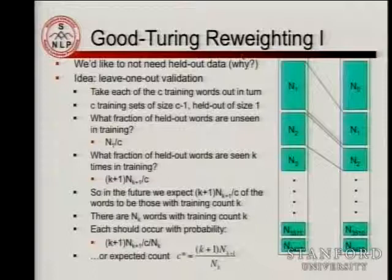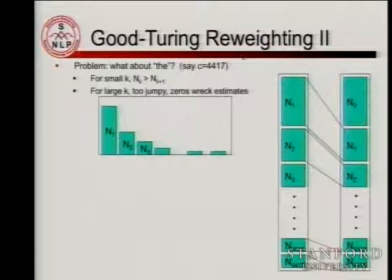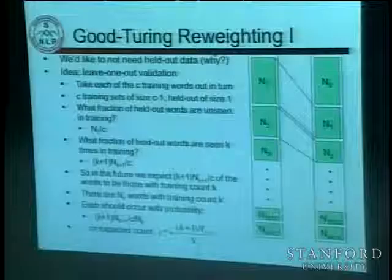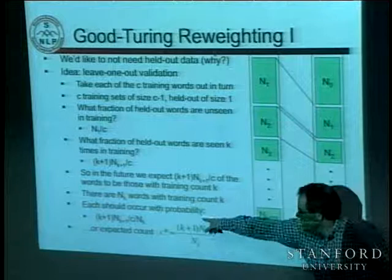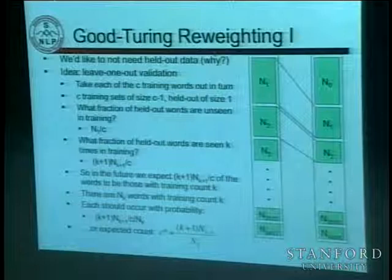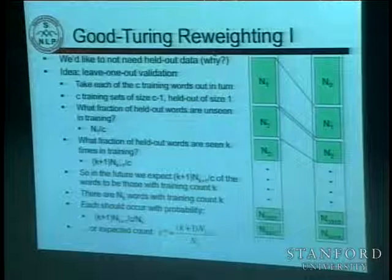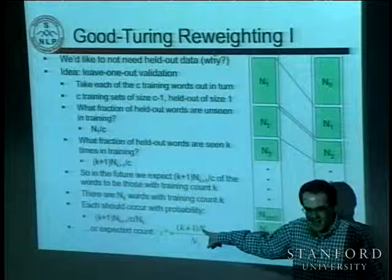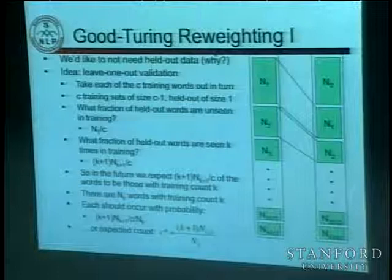If you literally try and do that, you come up with a big problem. The most common word in the Brown corpus was 'the.' If I try to use this equation to re-estimate the discounted count and hence the probability of 'the,' I'm going to get zero. Why? Because 'the' is the most common word, so there are zero words that occurred one time more often than 'the.' The numerator is zero and the answer is zero. So that's kind of crazy.